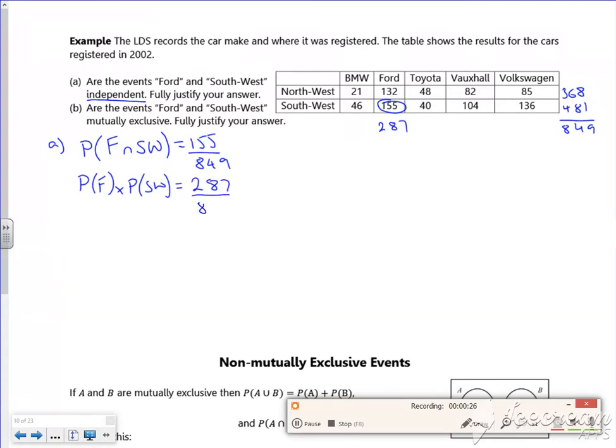And Southwest is 481 out of 849. I could do the calculation, so that gives me according to the calculator 0.1915.